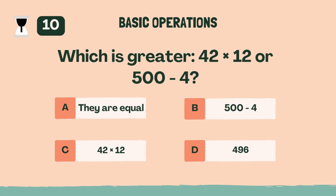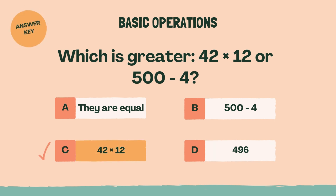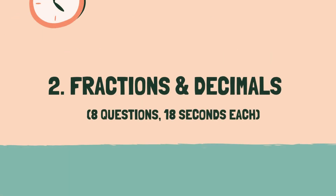Which is greater: 42 times 12 or 500 minus 4? The answer is C, 42 times 12. Great job, let's move on to the next category. Category 2: Fractions and Decimals.